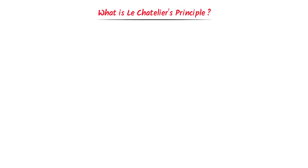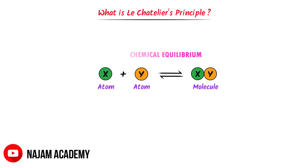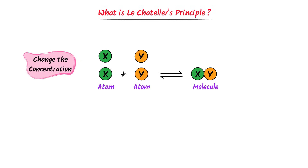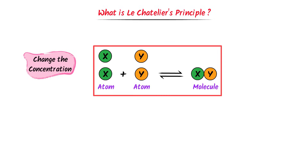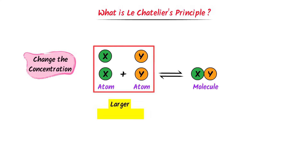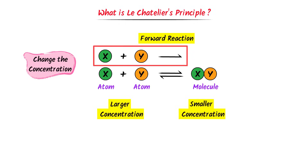Now what is Le Chatelier's principle in simple words? Consider the previous example — let this reaction be in chemical equilibrium. Now I am interested to disturb the chemical equilibrium. Let's say I add one more atom of X and one more atom of Y, so I have changed the concentration of reactants. The system will respond to this change. The concentration of reactants is large and the concentration of product is small, so the rate of forward reaction will become high to make more products. Now the rate of forward reaction is higher than the rate of backward reaction, or we say that equilibrium is shifted in the forward direction.